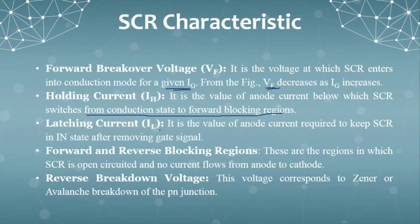Next is latching current. It is the value of anode current required to keep the SCR in on state after removing the gate signal. Even if I remove the gate signal, the SCR remains turned on. There should be some minimum amount of anode current Ia so that the device stays on — that minimum amount of current is the latching current.